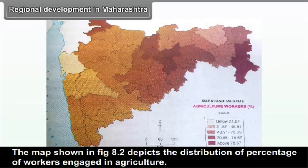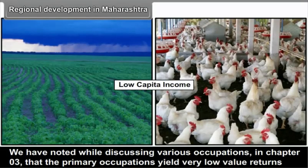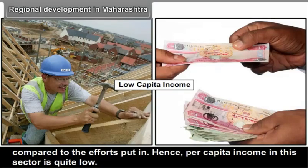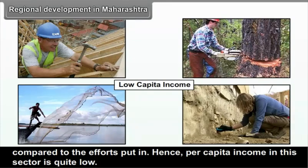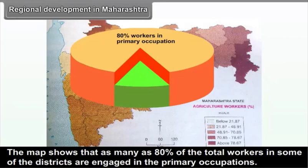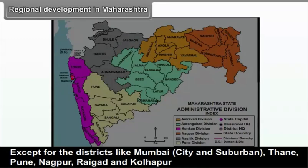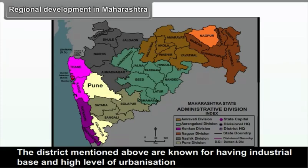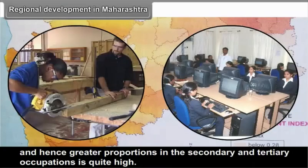The map shown in figure 8.2 depicts the distribution of percentage of workers engaged in agriculture. Primary occupations yield very low value returns compared to the efforts put in. Hence, per capita income in this sector is quite low. The map shows that as many as 80% of the total workers in some districts are engaged in primary occupations. Except for districts like Mumbai City and Suburban, Thane, Pune, Nagpur, Raigad and Kolhapur — which are known for industrial base and high urbanization — the percentage of workers engaged in agriculture is quite high, over 60%.